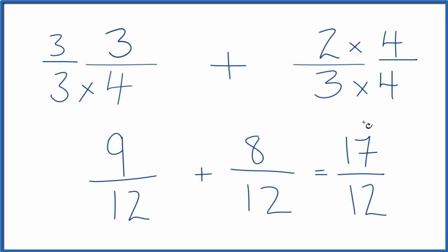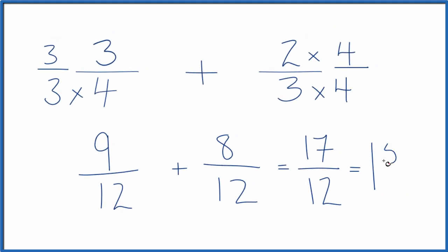This is an improper fraction because the numerator is larger than the denominator. We could change it to a mixed number. 12 goes into 17 one time with 5 left over. We bring the 12 here across. So 1 and 5 twelfths, that's the same thing as 17 twelfths.